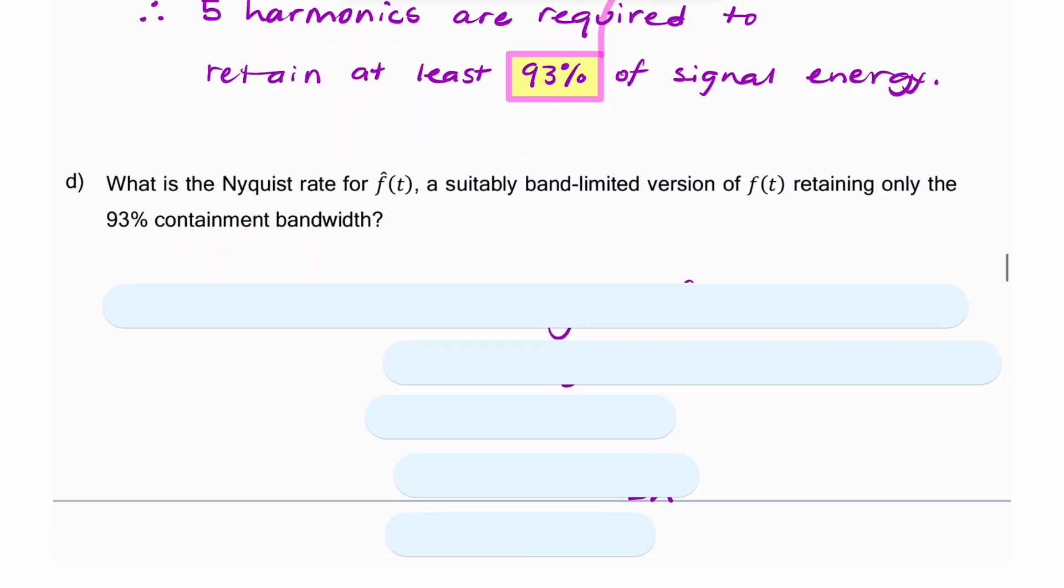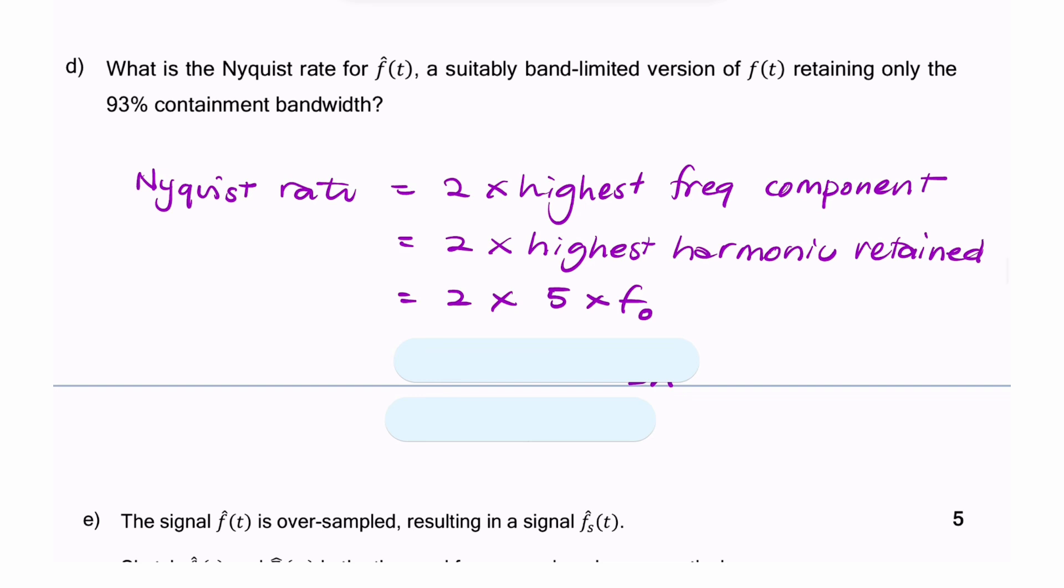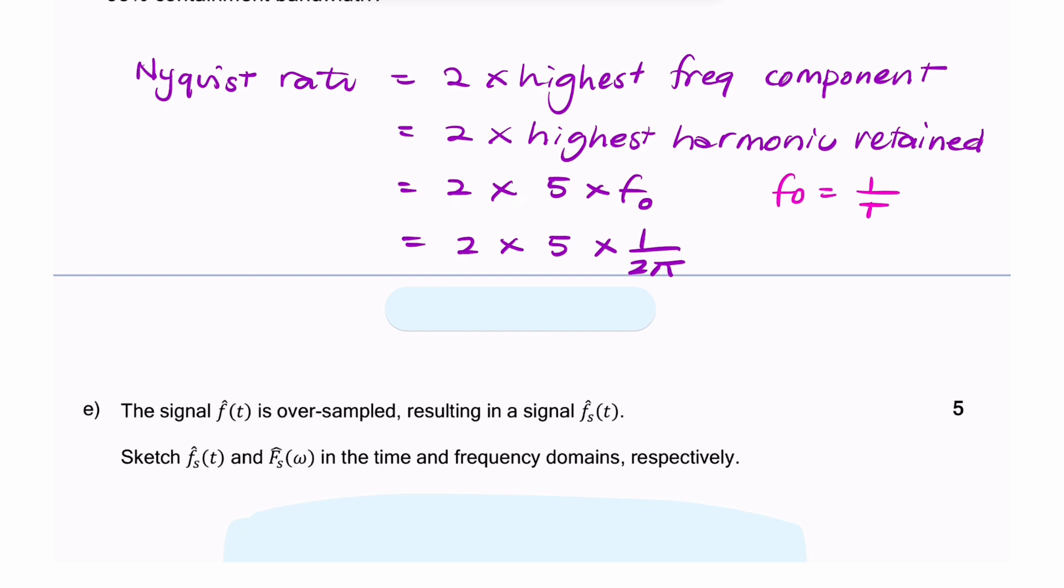The question then goes on to say, if we were to band limit f(t), that means pass it through a low-pass filter, what would be the 93% containment bandwidth? It's actually asking for the Nyquist rate, which is two times the 93%. Let's find the highest frequency component. Because we're talking about the fifth harmonic, it'll be two times the fifth harmonic. And remember, F₀ is simply 1 over T, and T is 2π. So it's 2 times 5 times 1 over 2π. That gives you your Nyquist rate.